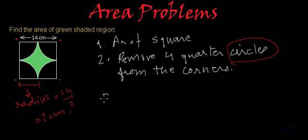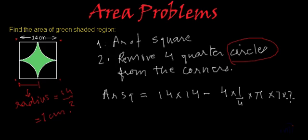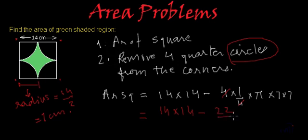Area of the square is side multiplied by side, so area of the square will be 14 multiplied by 14. Then we remove four quarter circles: four multiplied by one-fourth, multiplied by the area of the circle, which is pi r squared, where r is 7. So that is multiplied by 7 multiplied by 7. The four cancels, and we get 14 multiplied by 14 minus pi — using pi as 22 by 7 — multiplied by 7 multiplied by 7.